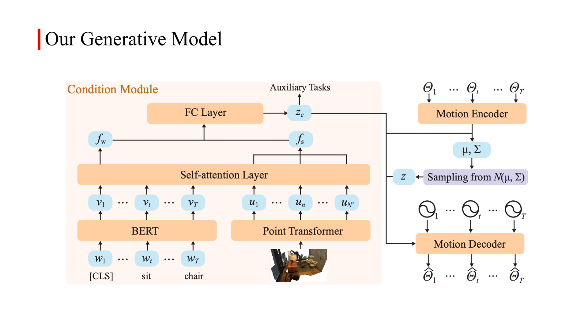Based on the conditional variational autoencoder framework, we present a novel generative model to generate human motions conditioned on the given scene and language description. The generative model mainly contains three parts: condition module, motion encoder, and motion decoder.